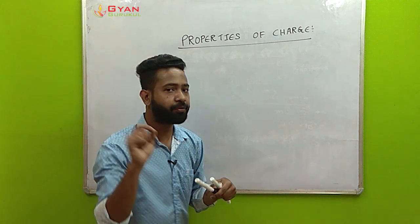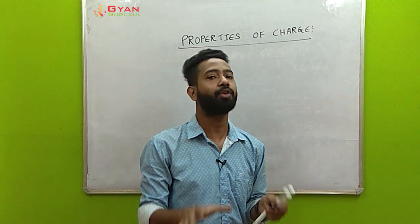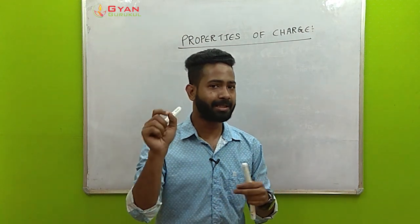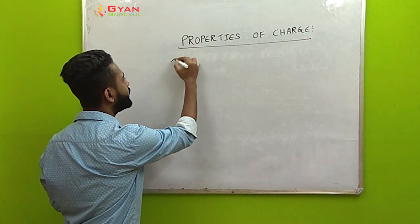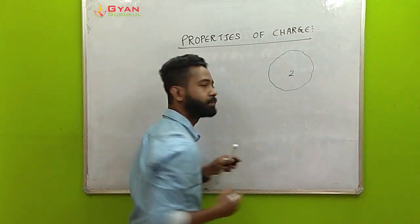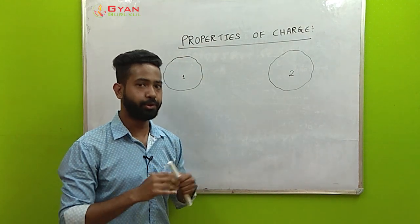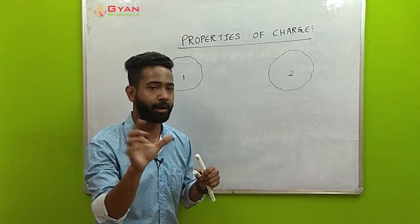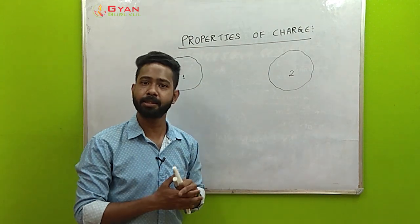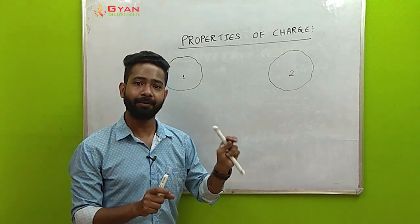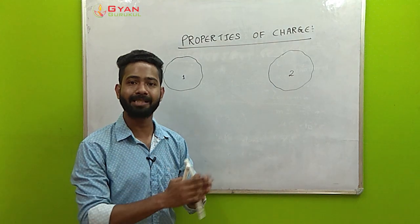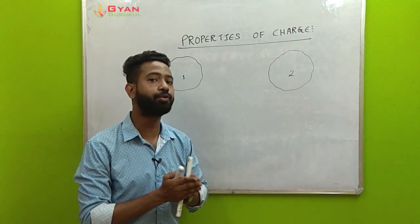The first important property is that charges are transferable — you can transfer charge from one body to another. In a general situation, any kind of body will have equal amounts of positive and negative charges, meaning neutral bodies have the same number of protons and electrons. That is why their charges nullify and the bodies are neutral.